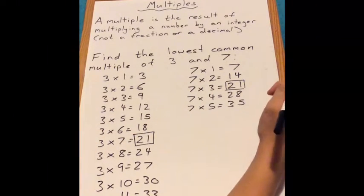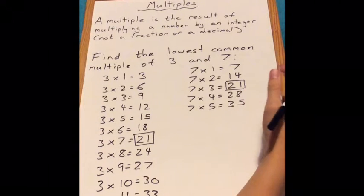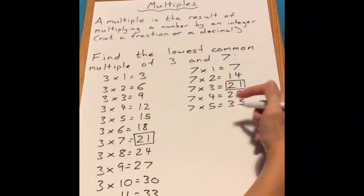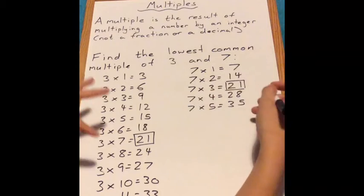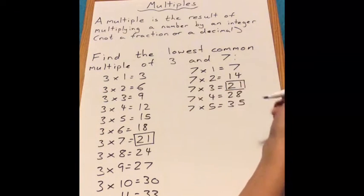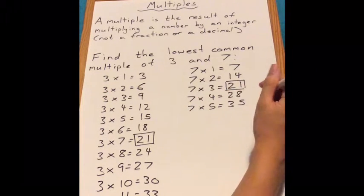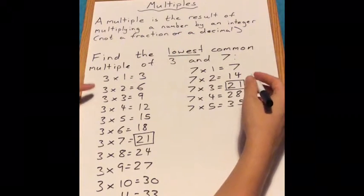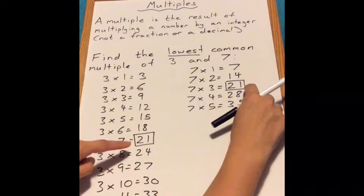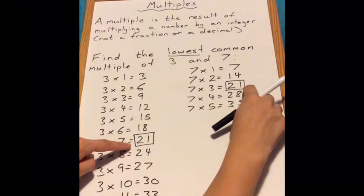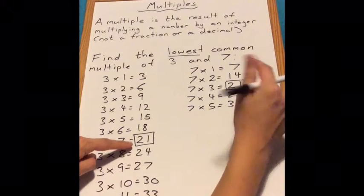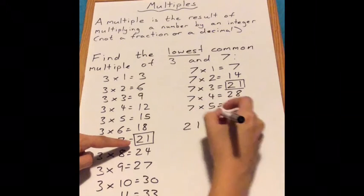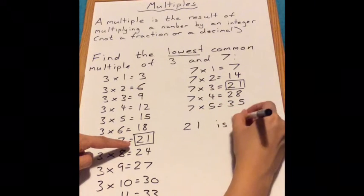So that's a common multiple. If we keep going maybe even up to the 15 or 18 times tables, we might start to find more common multiples between the 3s and the 7s. But just for this case, we wanted to find the lowest common multiple. Looking at both times tables, 7 times 3 and 3 times 7 both give us 21. So 21 is the lowest common multiple.